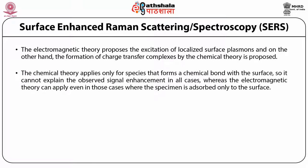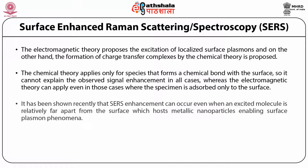The chemical theory applies only for species that form a chemical bond with the surface, so it cannot explain the observed signal enhancement in all cases, whereas the electromagnetic theory can apply even in those cases where the specimen is absorbed only to the surface. It has been shown recently that such enhancement can occur even when an excited molecule is relatively far apart from the surface that hosts metallic nanoparticles enabling surface plasmon phenomena.